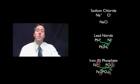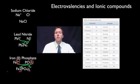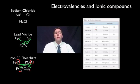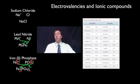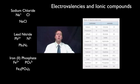Grabbing the number on the top left and putting it on the bottom right, and grabbing the number on the top right and putting it on the bottom left, will always give you the correct ionic compound formula. That's all about electrovalencies — they tell you how positively or negatively charged an ion is, and you can use that information to calculate the correct chemical formula of ionic compounds.